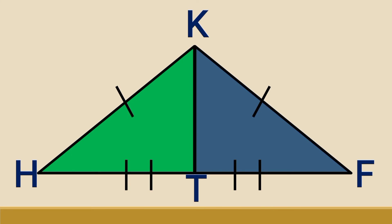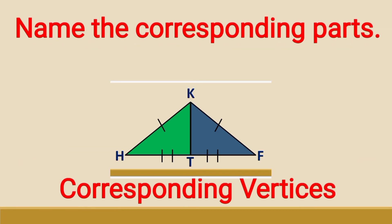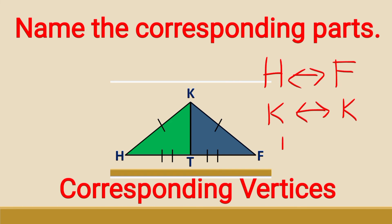Let's do the practice. We have two triangles: triangle HKT and triangle FKT. Let's name the corresponding parts, starting with the corresponding vertices. Vertex H corresponds to vertex F, vertex K corresponds to itself, and vertex T corresponds to itself.